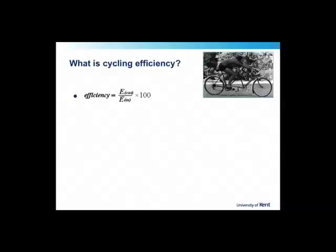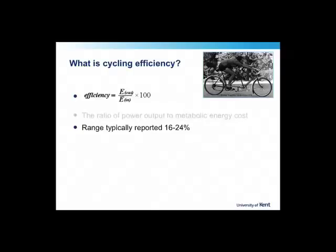So what is cycling efficiency? Efficiency is the ratio between work input to work output. In cycling, it's the ratio of power output on the bike, or work done, to metabolic energy cost. Typically we're looking at ranges of between 16 and 24% in the literature. So 16 to 24% of the metabolic energy produced goes into powering the bike; the rest is primarily lost as heat.